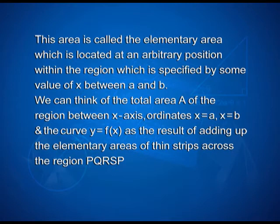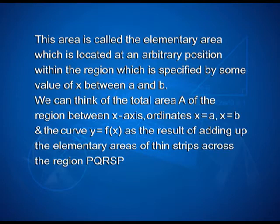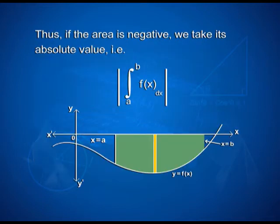We can think of the total area A of the region between the x-axis, ordinates x = a, x = b, and the curve y = f(x) as the result of adding up the elementary areas of thin strips across the region PQRSP. But it is only the numerical value of the area which is taken into consideration. Thus, if the area is negative, we take its absolute value, that is, |∫a to b f(x)dx|.